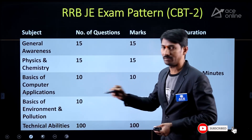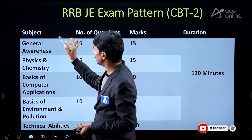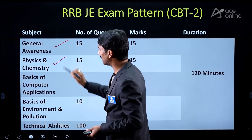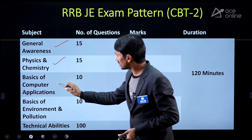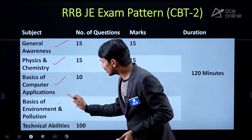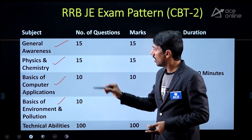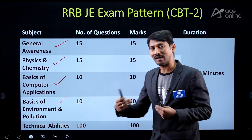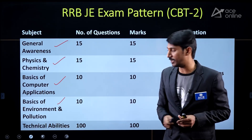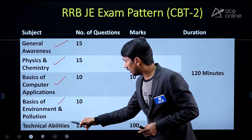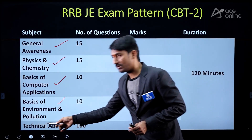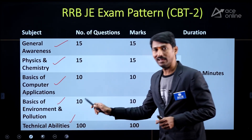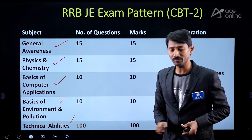The exam has categories including General Awareness, Physics and Chemistry, Basics of Computer Applications, and Basics of Environment and Pollution — all coming under General Studies. For the technical paper, that is the Electrical Engineering paper, it falls under Technical Abilities and carries 100 marks for electrical students.